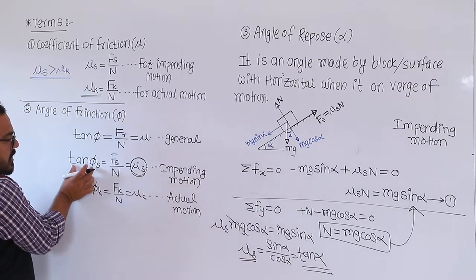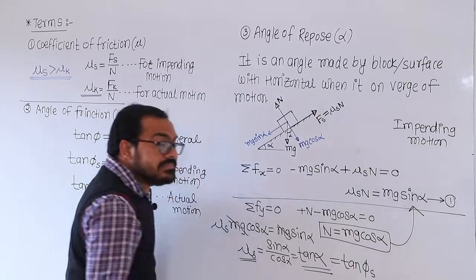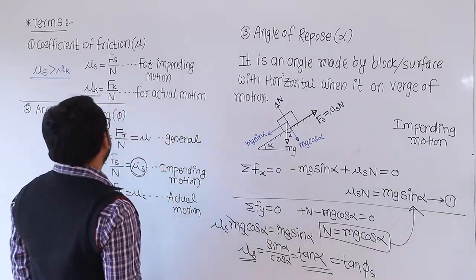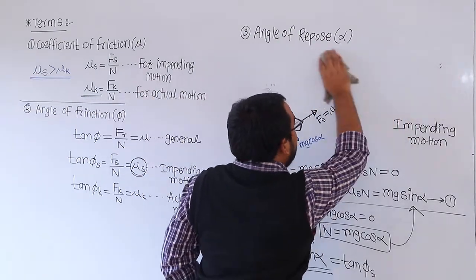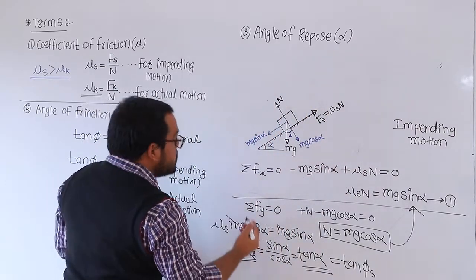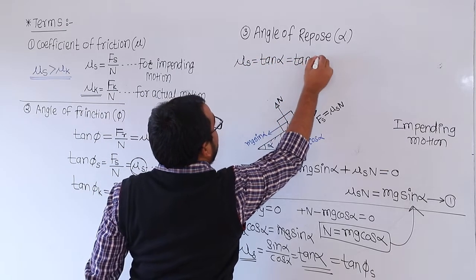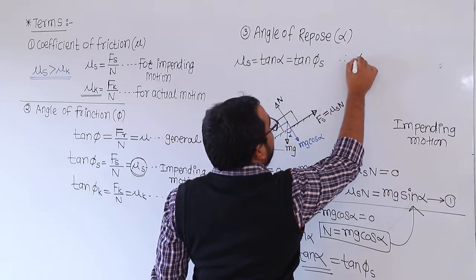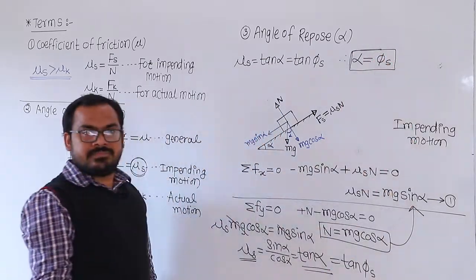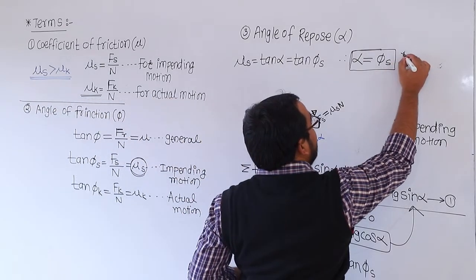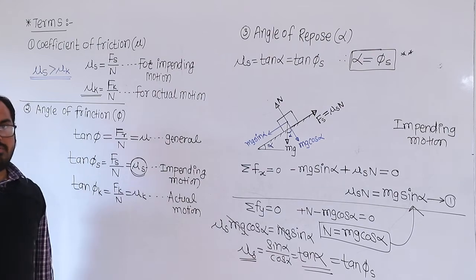So mu_s equals tan of phi_s, where phi_s is the angle of static friction. Since mu_s equals tan alpha and also mu_s equals tan phi_s, we conclude that the angle of repose alpha equals the angle of static friction phi_s. This is the important conclusion: angle of repose equals angle of friction.